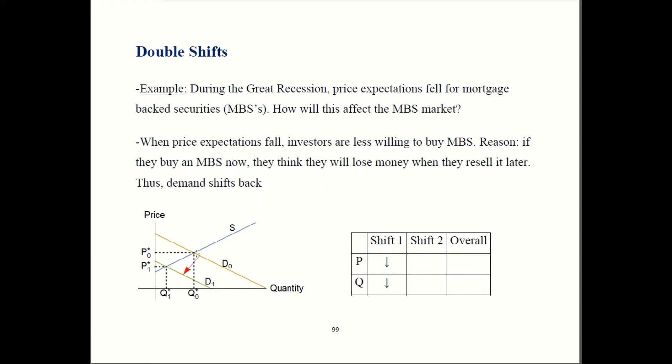Demand is originally here at D0, which gives us this price and this quantity. That then changes when demand shifts back. It's going to be over here at D1. Here's our new equilibrium price and new equilibrium quantity. So price has fallen and quantity has also fallen. That's why I draw two down arrows here for price and quantity when I look at the first shift.